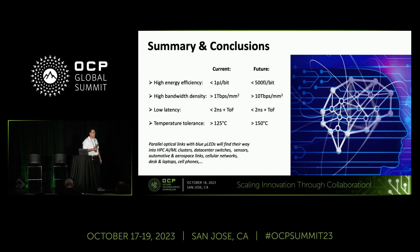In summary, our solution achieves high energy efficiency — today 1 picojoule per bit, targeting 0.5 picojoule per bit in the future. We have high bandwidth density, achieving better than 1 terabit per second per millimeter squared, targeting 10 terabit per second per millimeter squared in the future. Our latency is low at 2 nanoseconds plus time of flight, and temperature tolerance is better than 125 degrees C, going to 150 degrees C in the future.